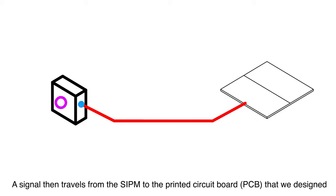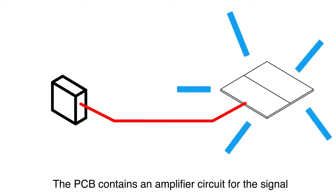When the photons hit the silicon photomultipliers, they create a current. Each SIPM is attached to a hybrid circuit on our PCB.